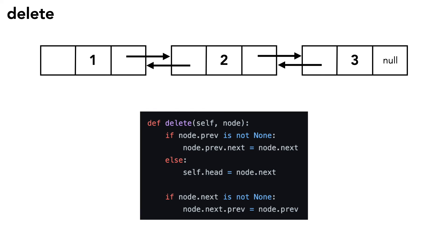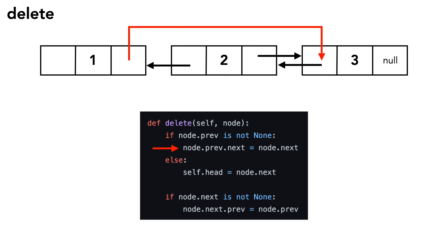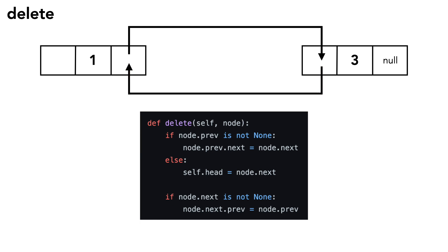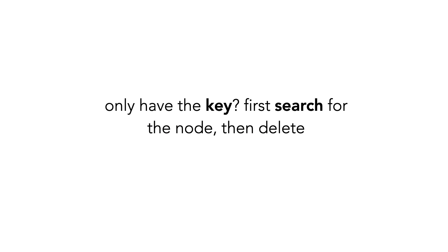Finally, let's discuss deleting a node from a linked list. In this case, we want to delete the node with a data value of 2. The node we want to delete has a previous pointer that points to 1. We set 1's next pointer to 2's next node. 2's next node is 3. We set 3's previous pointer to 2's previous pointer, which is 1. Similar to insert, this is a constant time operation, so its runtime is O(1). However, if you only have the key, which was 2, and not a pointer to the node, you first need to search the list, which as we discussed earlier, is O(n).